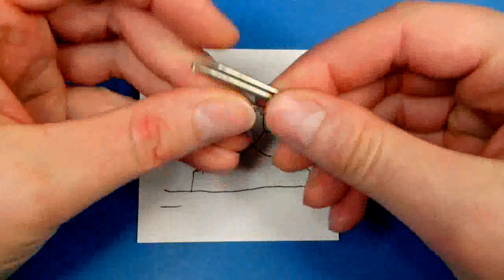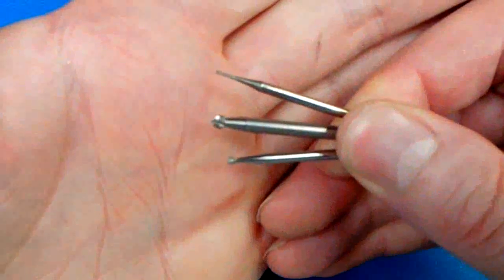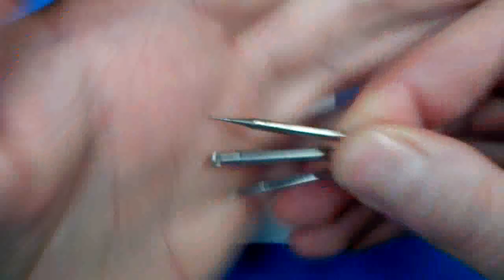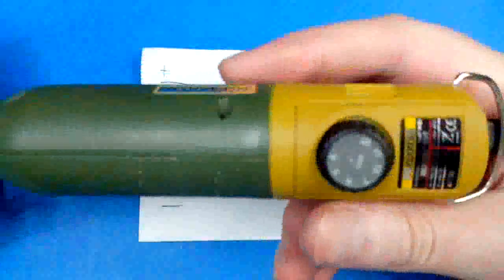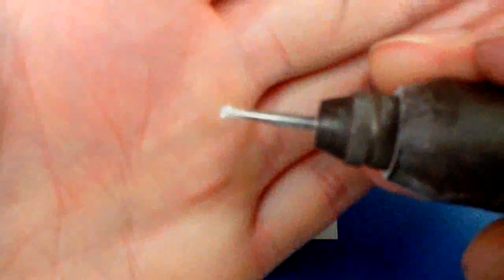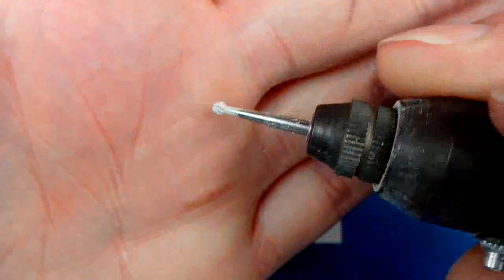We'll be using milling bits like these. You can use a size that suits you. I have four different sizes. You put them in something like a Dremel. I use a Proxxon tool for this. This is the bit I like best, somewhere in between the biggest and smallest.